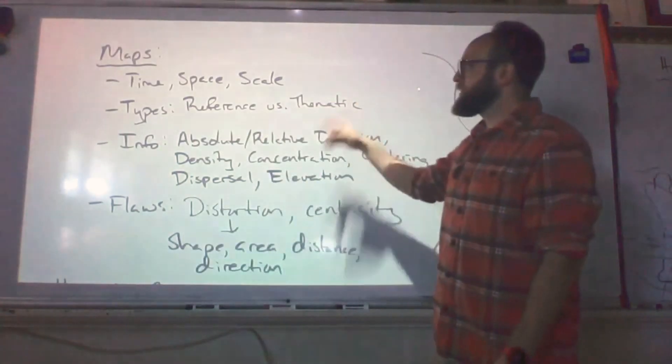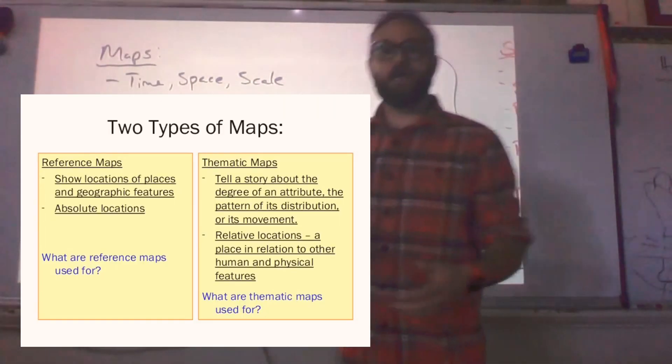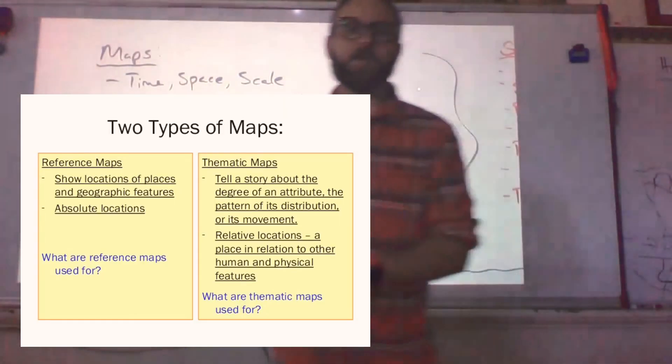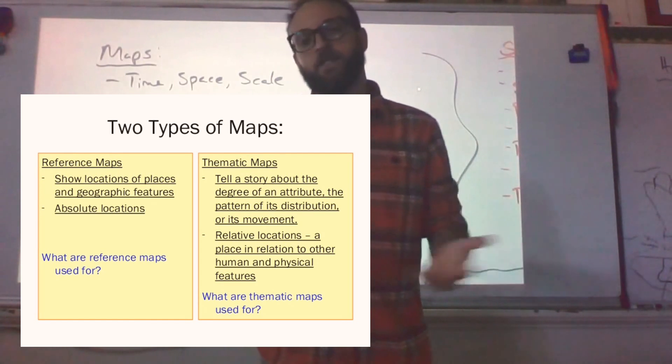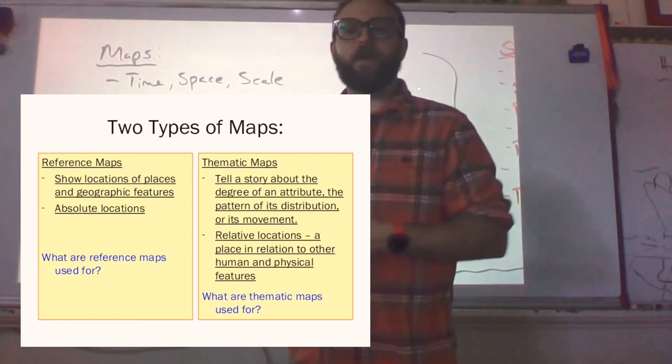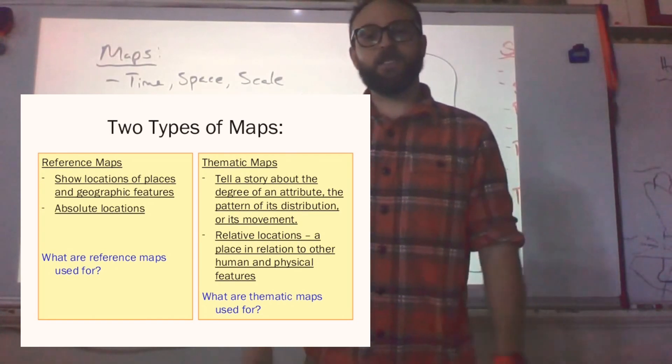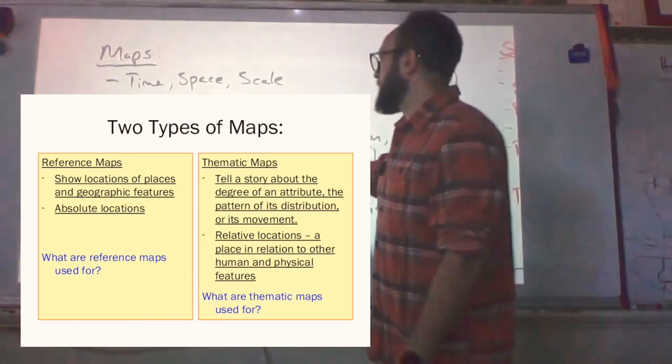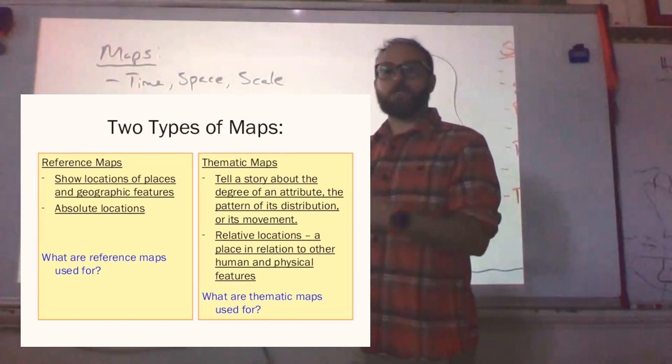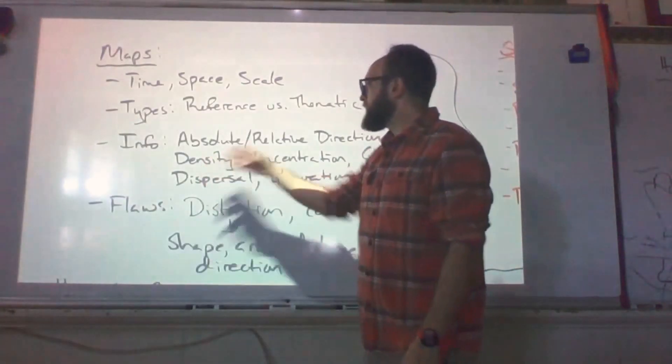Types of maps would be reference versus thematic. Reference maps will say, okay, this is how many Starbucks are within this many miles. A thematic map will give you a genre of things to look at. So for example, we could be looking at outbreak and diffusion of diseases. So this one is going to be more about genre, and this is going to be about objects relative to other objects.